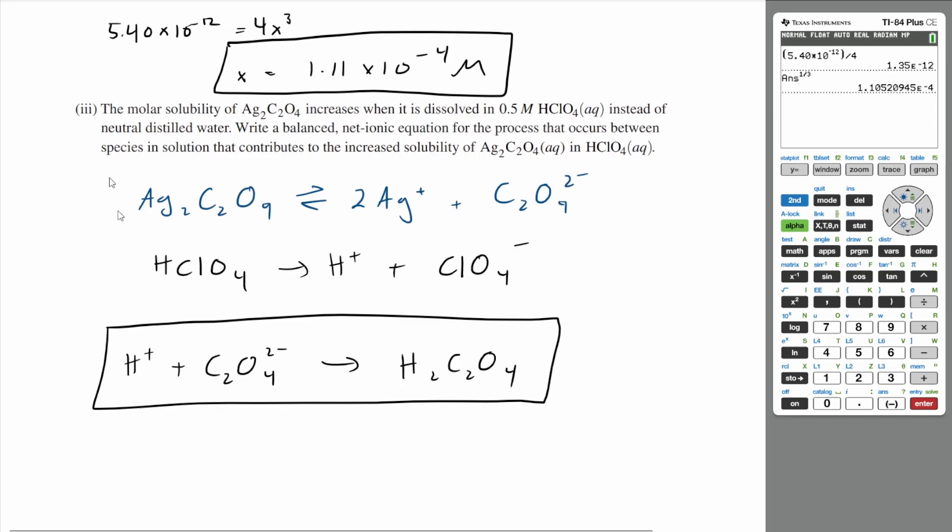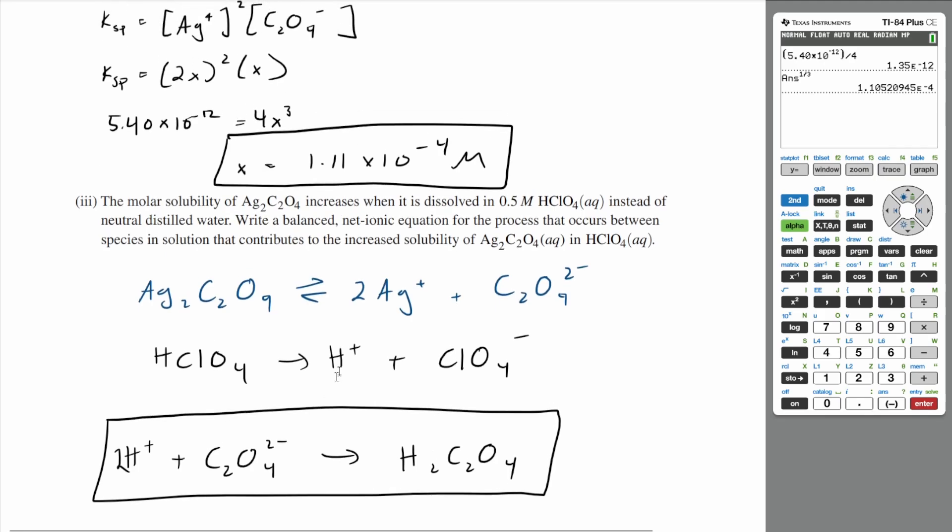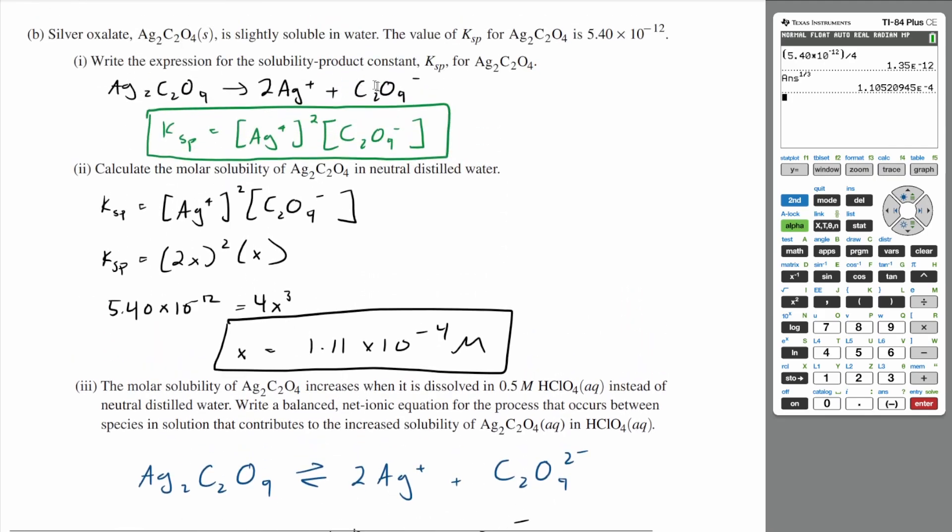And, whoops, this should be balanced. There needs to be a 2 here. What it does is use up your oxalate ions. If you look at your dissociation, if you use up your oxalate ions, the system is going to be like, hey, how do I produce more oxalate? And the way you do that is by increasing the forward reaction.